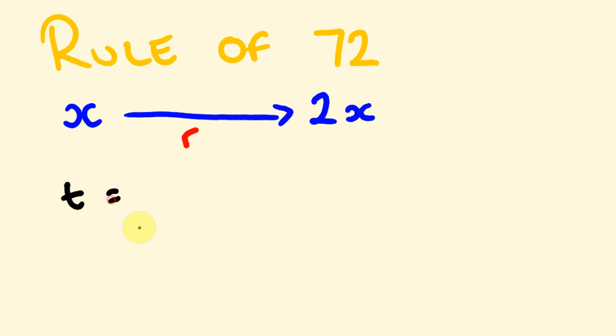equals 72 divided by the growth rate. So this is the growth rate, whether this be an interest rate or whether this be the population growing at five percent or something. This is what I mean by this growth rate.